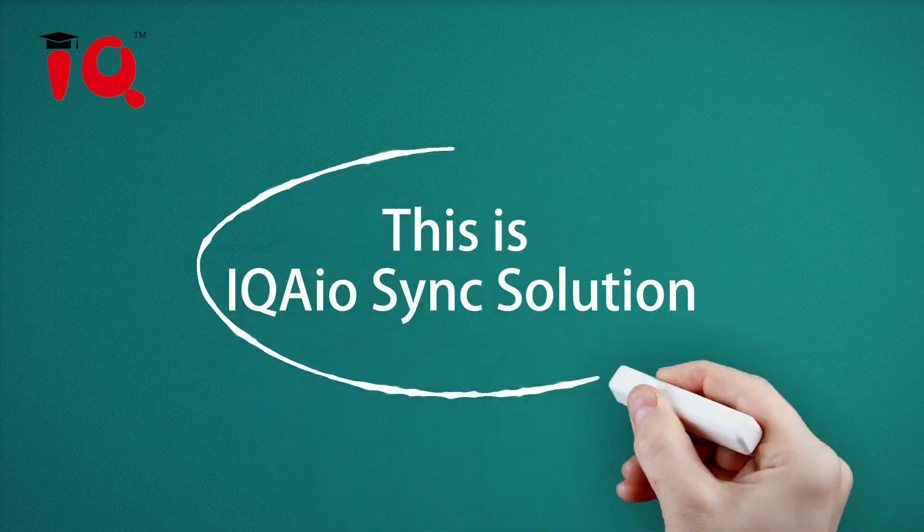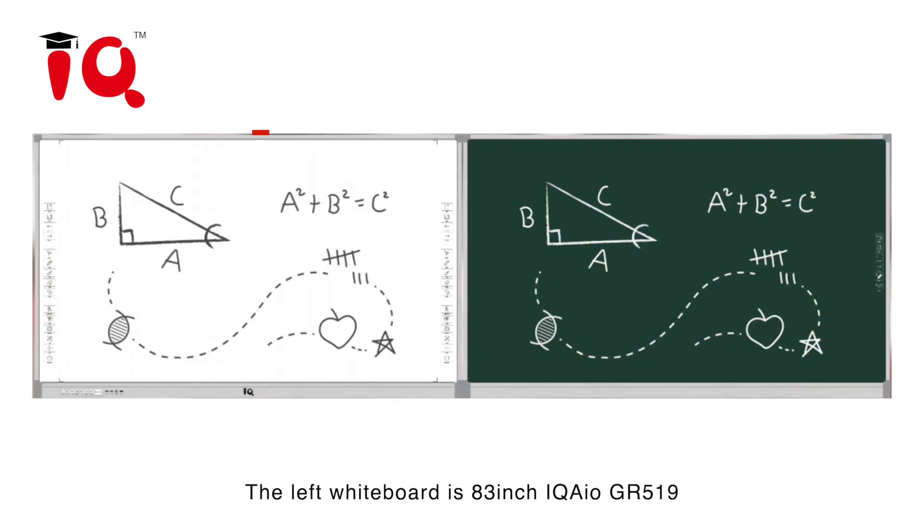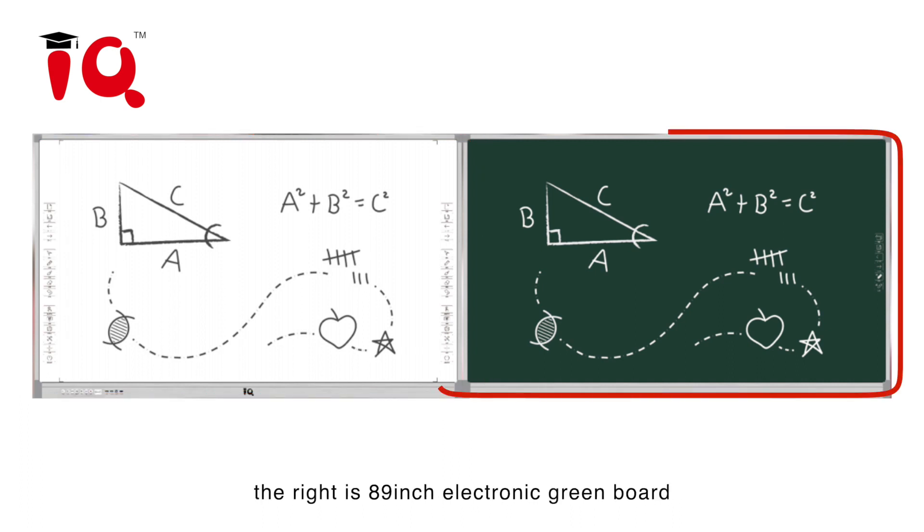This is IQ AIO Sync Solution. The left whiteboard is 83-inch IQ AIO GR519. The right is 89-inch electronic greenboard.